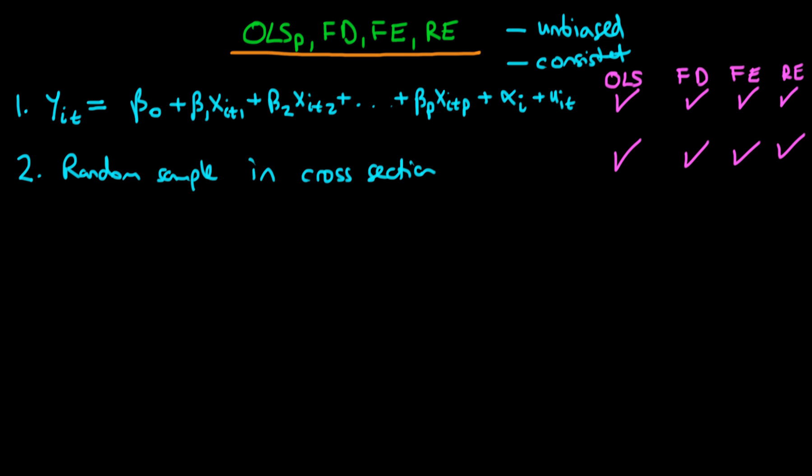The third assumption which we require is that the expectation of the idiosyncratic error u_it given some vector of my explanatory variables which I'm going to write down as X with a sort of bar below it for that particular individual i for some other time period s.